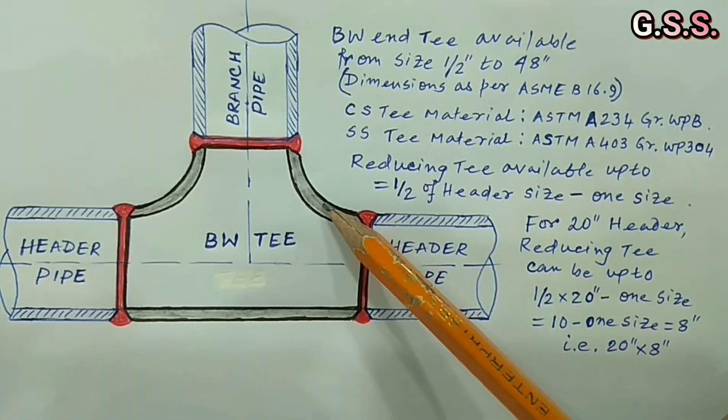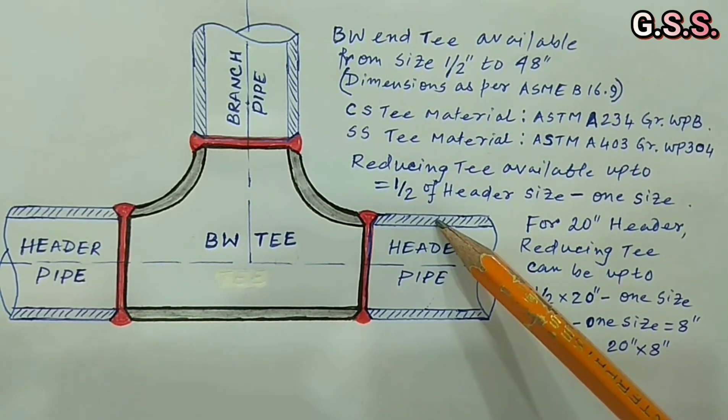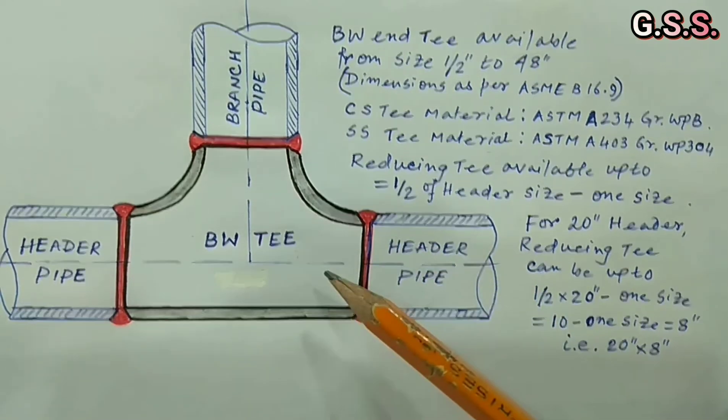Thickness of T is same as matching pipe. Hence no separate thickness calculation is required for a T.